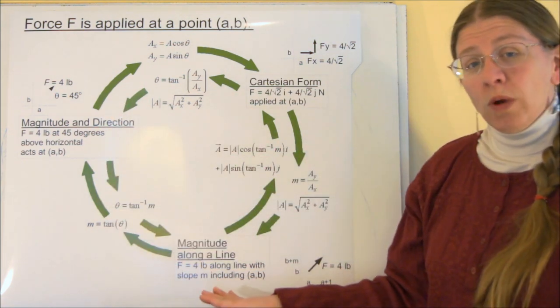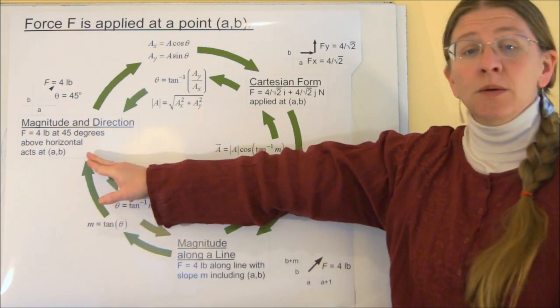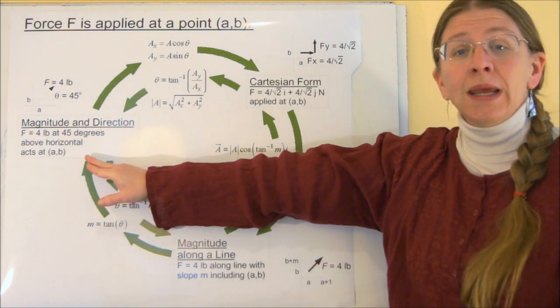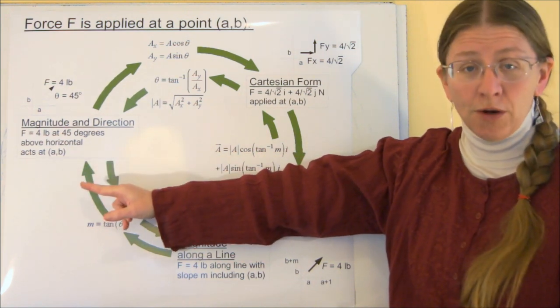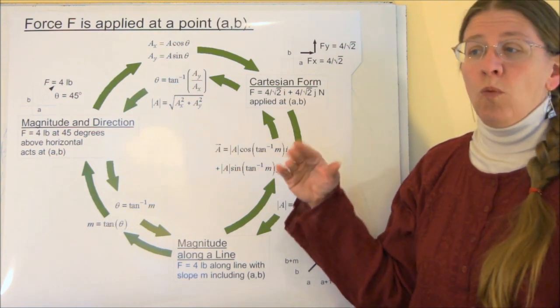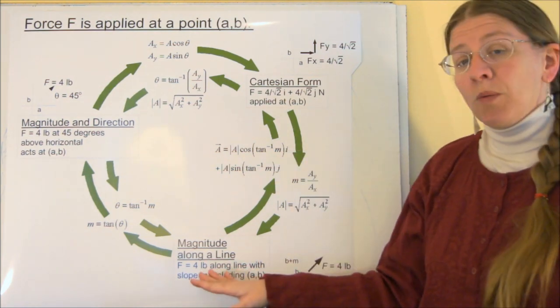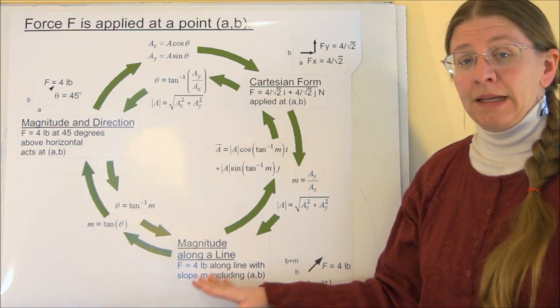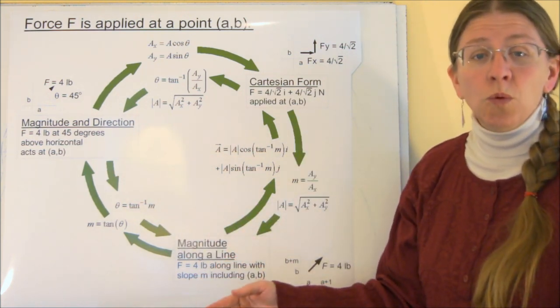We can work with vectors in any of these forms. So you will see that we can add two vectors that are already in magnitude and direction by using the triangle law or the parallelogram law. You can add vectors in Cartesian form once they're already there by adding the i's and adding the j's. Generally what we're going to do with magnitude along a line is move it into one of these other two ways to be able to work with vectors.